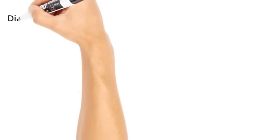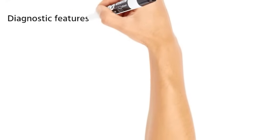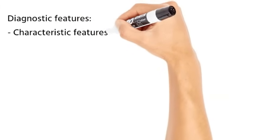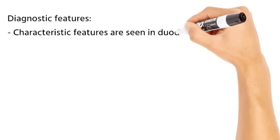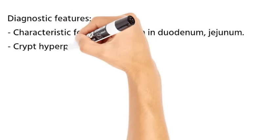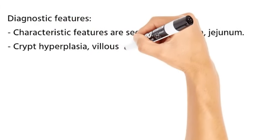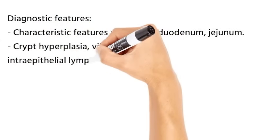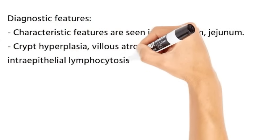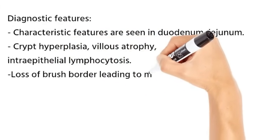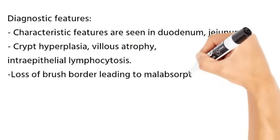Crypt hyperplasia with marked loss of villi can progress to severe villous atrophy. Intraepithelial lymphocytosis is also seen. Though these are not specific features, they are quite sensitive. Loss of brush border or microvilli leads to malabsorption.